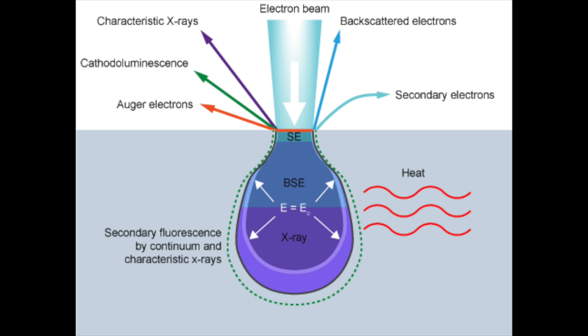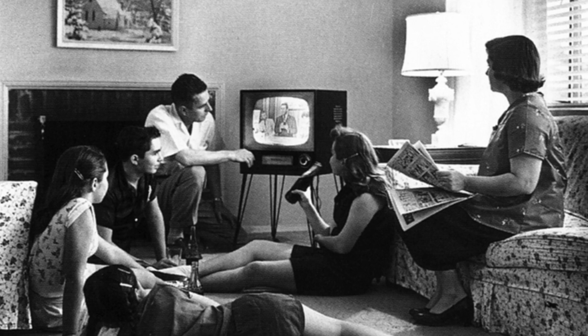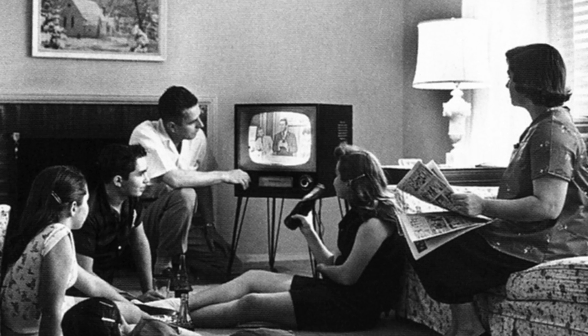Another technique that we use in SEM is cathodoluminescence, or CL. CL is a phenomenon that occurs when electrons — our electron beam — interacts with a luminescent material, and this causes the emission of photons. Some of these photons have a wavelength that exists on the visible spectrum, so we're able to image it with the detector. An outdated but commonplace example of cathodoluminescence are the cathode ray tube televisions from the first early generations of television that used this technology.